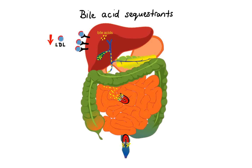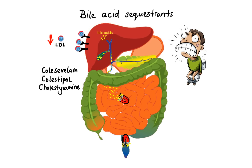Examples of drugs that belong to this class are colesevelam, colestipol, and cholestyramine. Side effects are limited to the GI tract, so bloating, indigestion, constipation, and nausea are quite common. Additionally, these agents may decrease absorption of fat-soluble vitamins, and they also have the potential to form insoluble complexes with other drugs, thus interfering with their absorption.